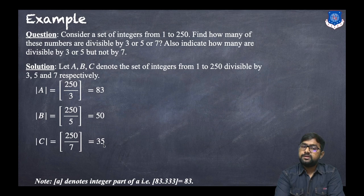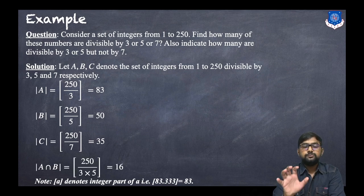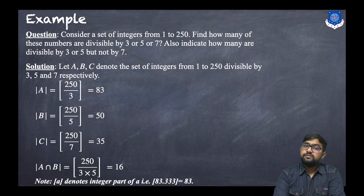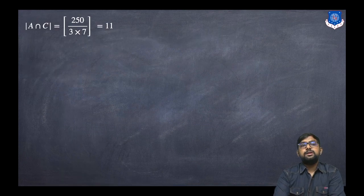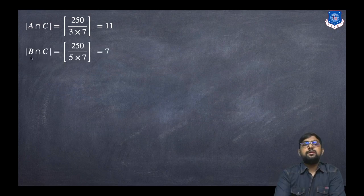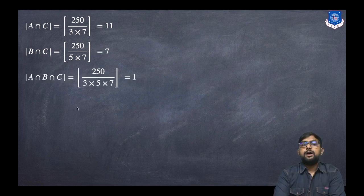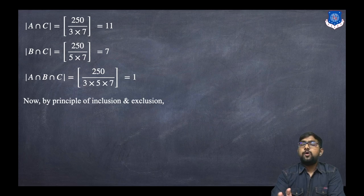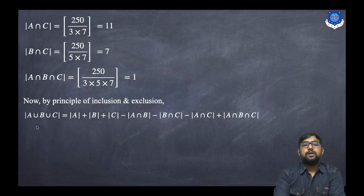Now for the intersections: |A ∩ B| = ⌊250/15⌋ = 16 (divisible by both 3 and 5). |A ∩ C| = ⌊250/21⌋ = 11. |B ∩ C| = ⌊250/35⌋ = 7. |A ∩ B ∩ C| = ⌊250/105⌋ = 1 (divisible by 3, 5, and 7).